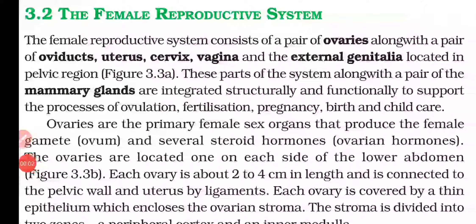Hello everyone. In this video we will learn about the female reproductive system. The female reproductive system consists of a pair of ovaries along with a pair of oviducts, uterus, cervix, vagina, and the external genitalia, which is located in the pelvic region.